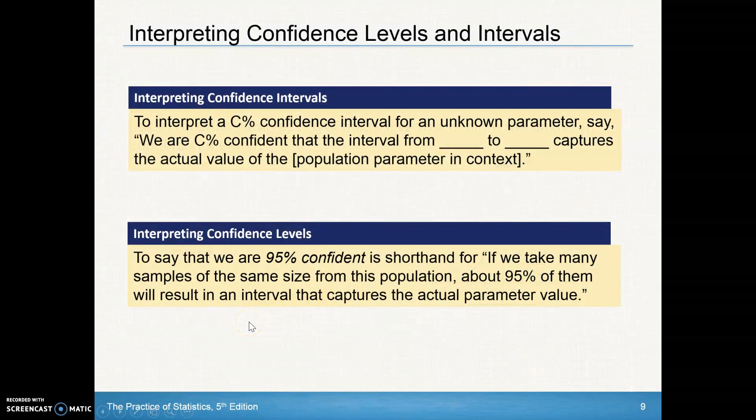So this is how we say it. This is kind of the key phrases that we want to have here. This is something you should write down in your notebook. This is a template for what you have. If you're asked to interpret a confidence interval, you can use this exact same template. You can say to interpret a blank confidence interval. In this case, we may have a 95% interval for an unknown parameter. You say, we are C% confident that the interval from blank to blank captures the actual value of whatever population parameter you're trying to estimate.